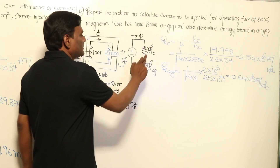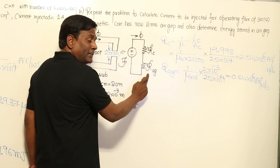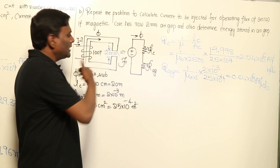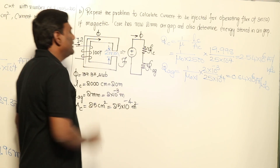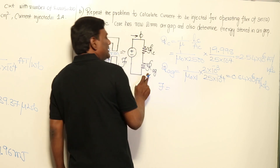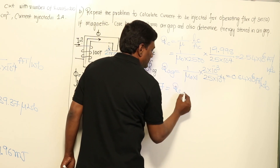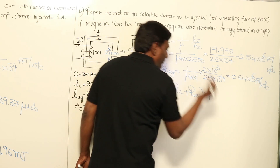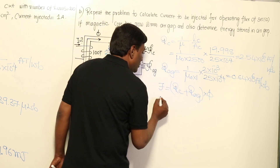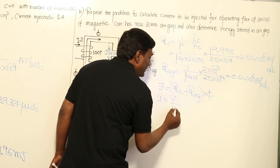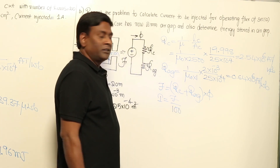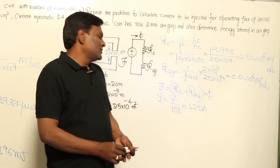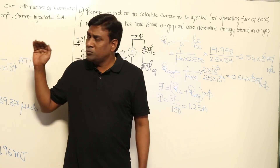Total reluctance = reluctance of core + reluctance of air gap. Total reluctance × flux = MMF, and MMF / N turns gives the current. So current = (reluctance_core + reluctance_air) × flux / N = 1.25 amperes.